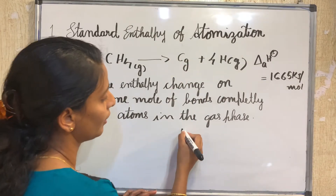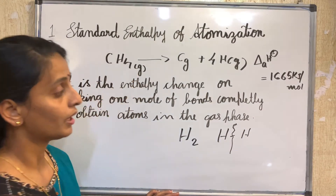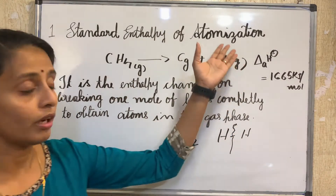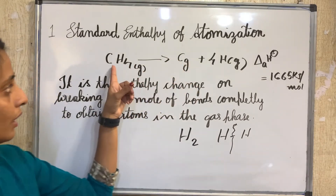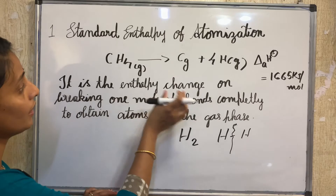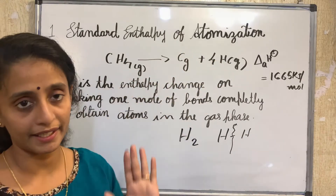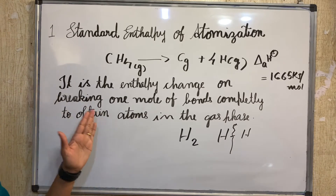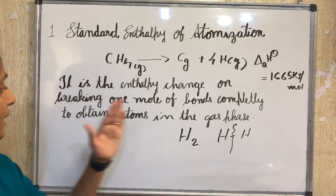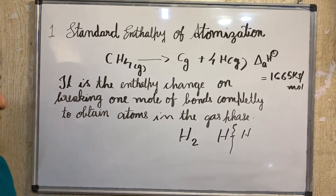For example, consider CH₄ — in methane, carbon and hydrogen are present. When we break the bonds between carbon and hydrogen, we get carbon and 4 hydrogen atoms. Standard enthalpy of atomization is the enthalpy change on breaking one mole of bonds completely to obtain atoms in the gaseous phase. It is represented as ΔaH°.